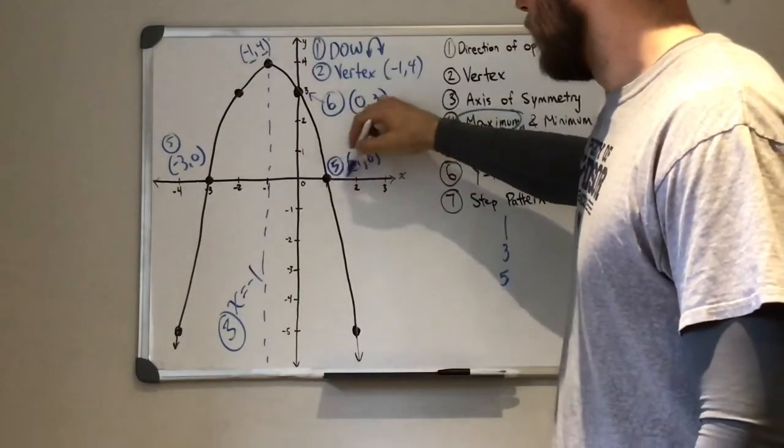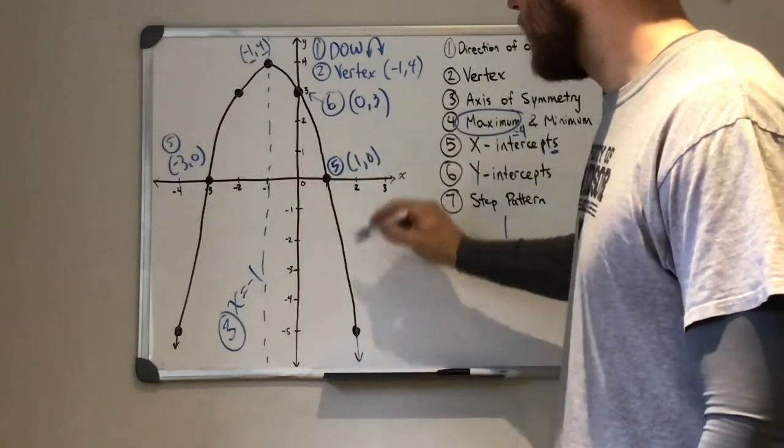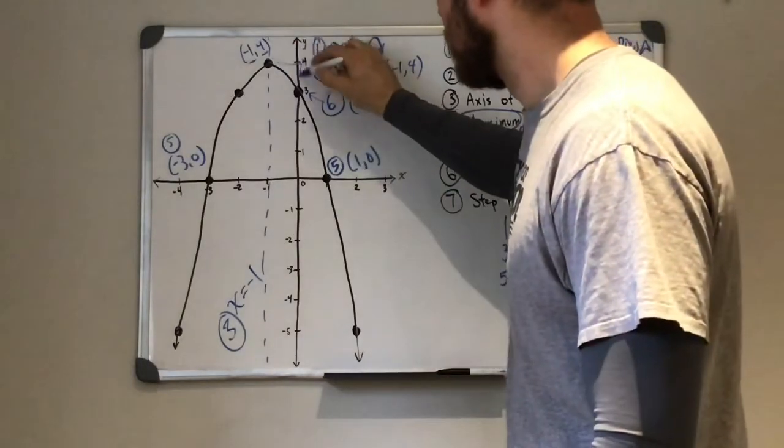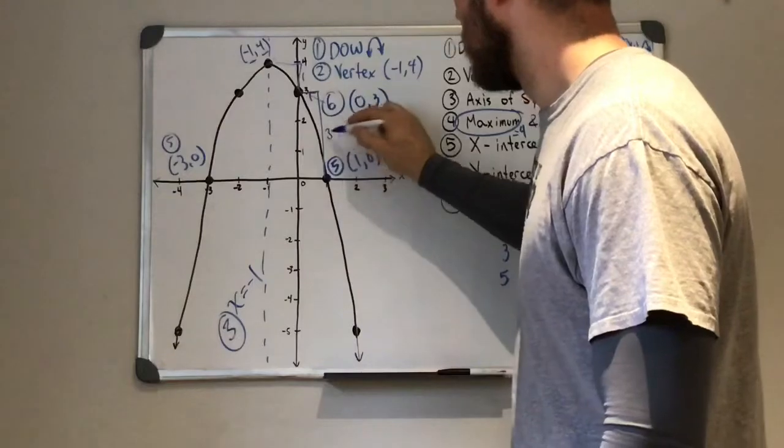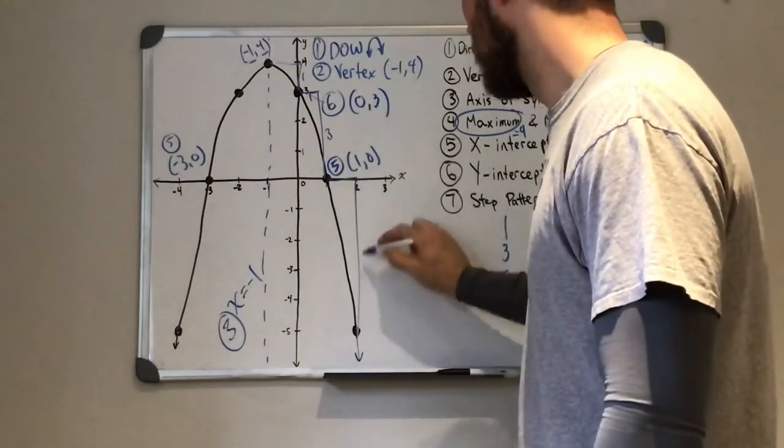We went right 1, we went down 3. We went right 1 and down 5. So here's our 1, 3, 5.